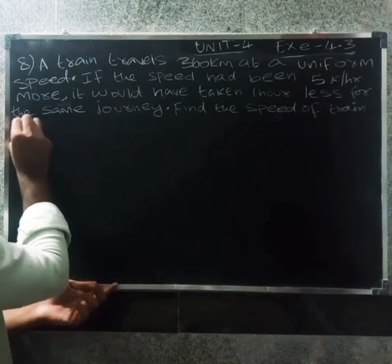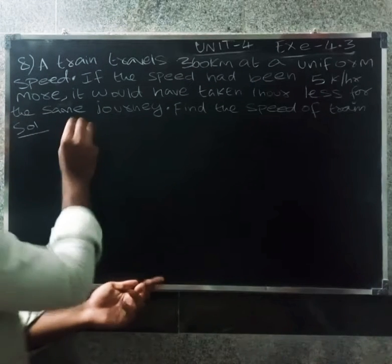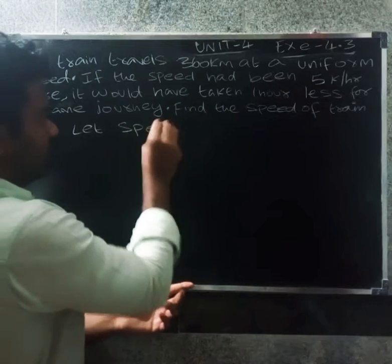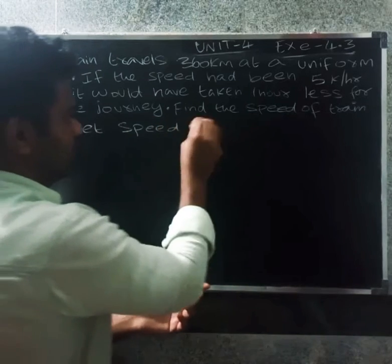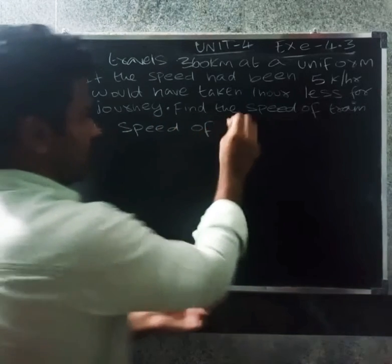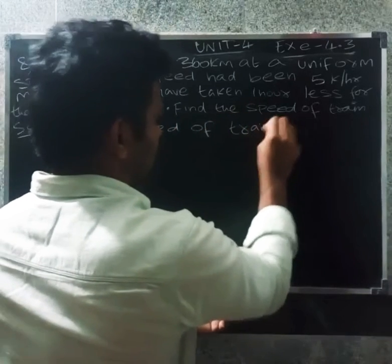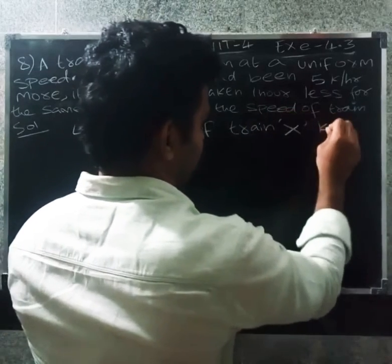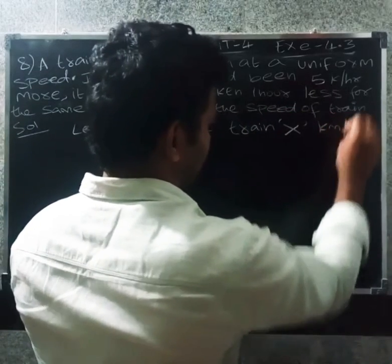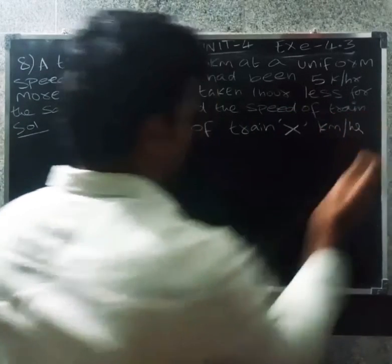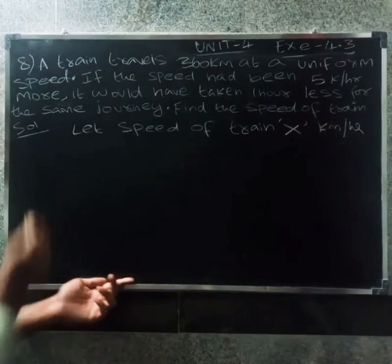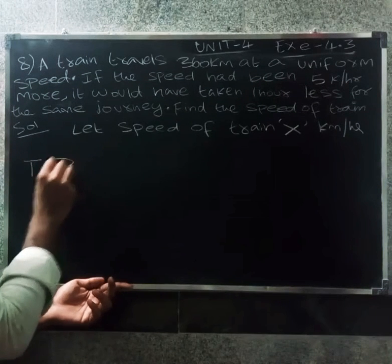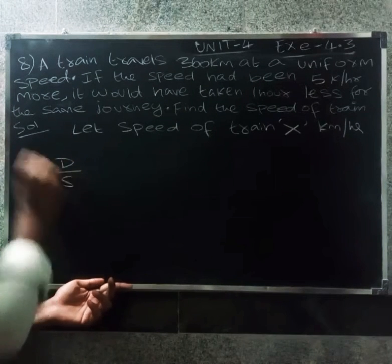Solution: Let the speed of the train be X km per hour. Time is equal to distance by speed, so time equals 360 by X km per hour.